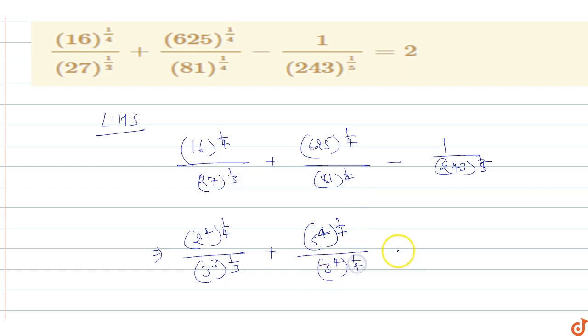Minus 1 upon 243, which is 3 power 5 whole power 1 by 5.